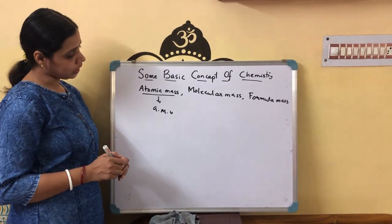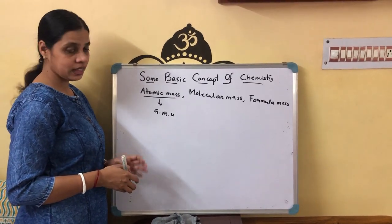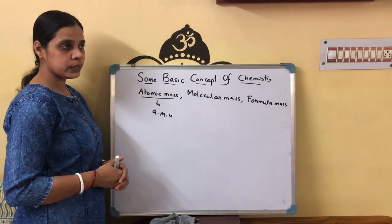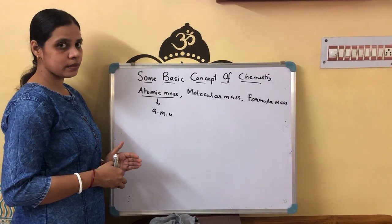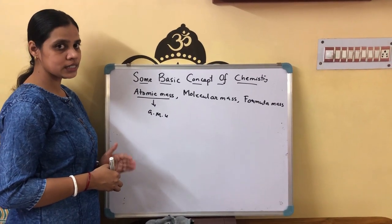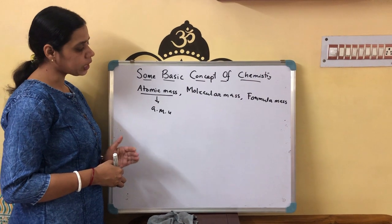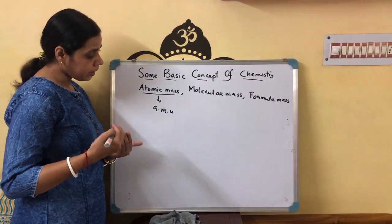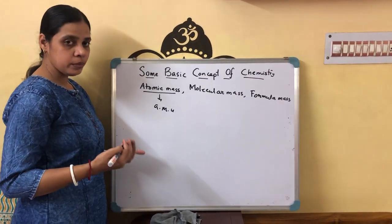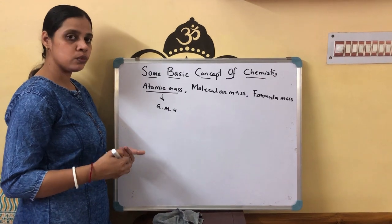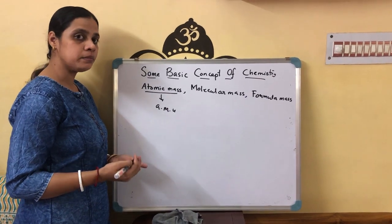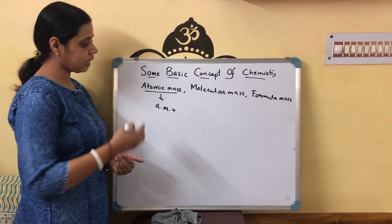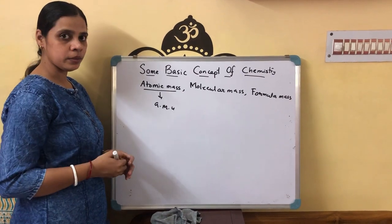So how can we calculate the atomic mass by taking the help of AMU? For that purpose, we take a stable isotope of carbon, that is the C12 isotope. We measure how many times an atom is heavier than one-twelfth the mass of a C12 isotope. By this way, we can calculate atomic mass.